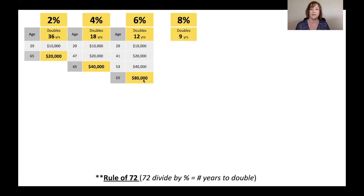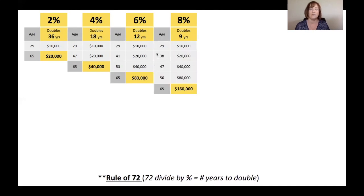At 8%, money doubles every 9 years. 72 divided by 8 is 9. Let's just see how that works out. So just an extra 2%, again, doubles every 9 years. So now 38, you've got 20. By age 47, you've got 40. By age 56, you've got 80. And by age 65, you have $160,000.